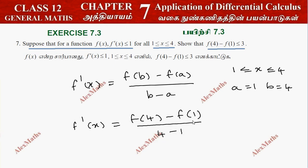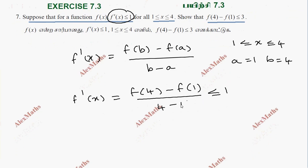The whole value is f dash of x, and since f dash of x is less than or equal to 1, applying the Mean Value Theorem gives us f of 4 minus f of 1 is less than or equal to 1 times 3, which is less than or equal to 3.